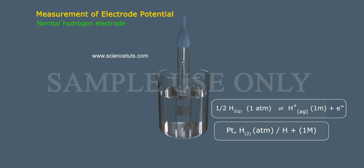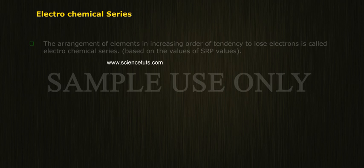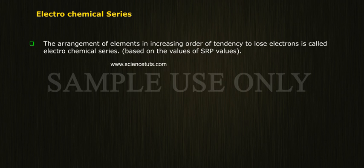The Standard Hydrogen Electrode is represented as Pt | H₂ (1 atmosphere) | H⁺ (1 molar). The Normal Hydrogen Electrode (NHE) is constructed by bubbling H₂ gas at a certain pressure over platinized platinum sheets immersed in 1 molar HCl solution.